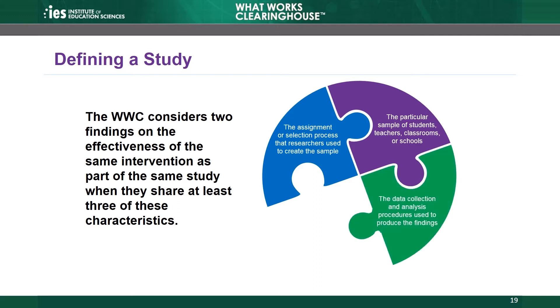The third characteristic is the data collection and analysis procedures used to produce the findings. When authors use identical or nearly identical procedures to collect and analyze data, the findings may be related. The fourth characteristic is the research team that conducted the study. When manuscripts share one or more authors, the findings reported in those manuscripts may be related. When two findings on the effectiveness of the same intervention share at least three of these characteristics, the WWC considers them parts of the same study, demonstrating similarity or continuity in the intervention and comparison groups and in the procedures used to produce the findings.